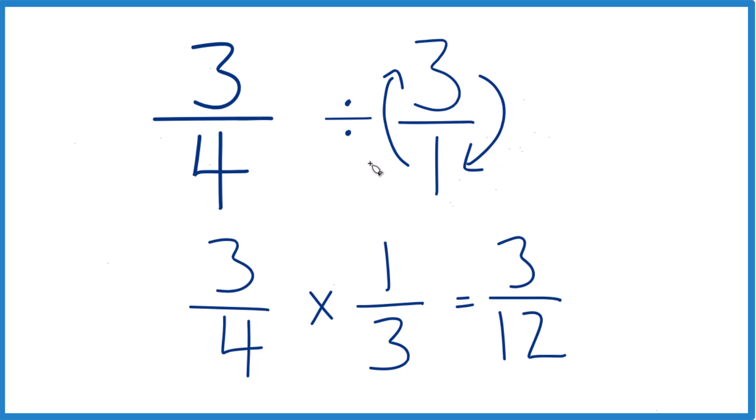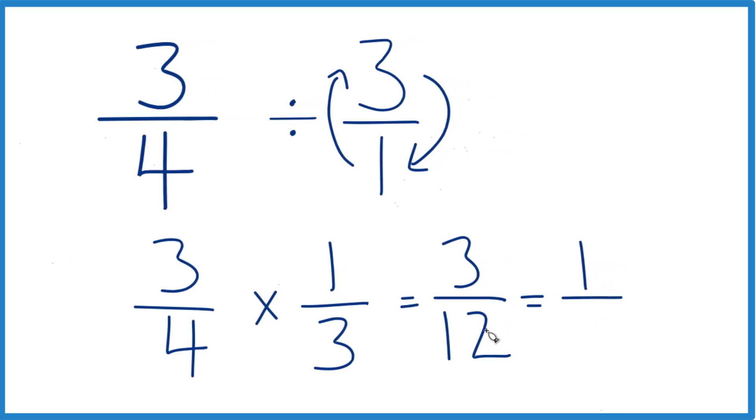So 3 fourths divided by 3 equals 3 twelfths. But we can simplify this further, because 3 goes into itself and 12 evenly. 3 divided by 3 is 1, 12 divided by 3 is 4. So 3 fourths divided by 3 is also 1 fourth.